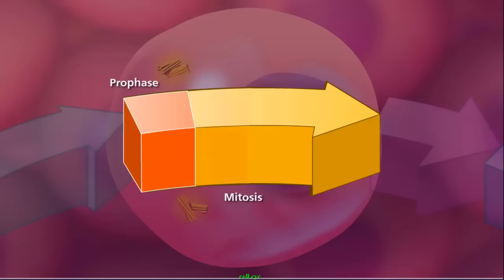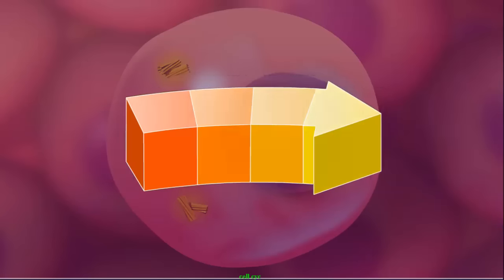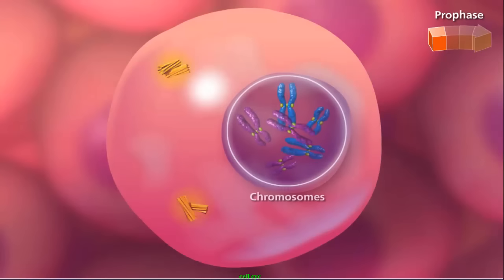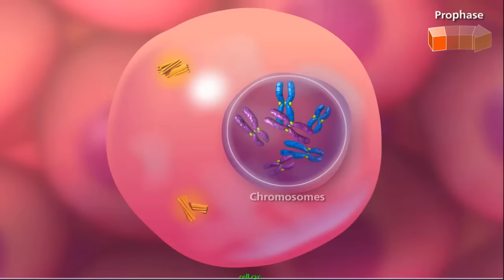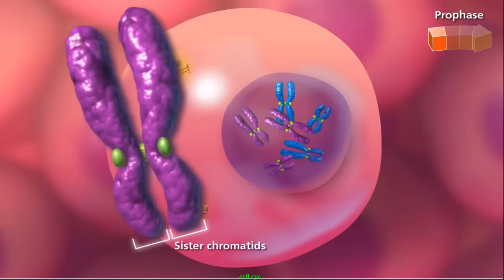The cell is now ready to go through mitosis, which consists of prophase, metaphase, anaphase, and telophase. During prophase, the chromosomes condense and become visible, appearing as two sister chromatids held together at the centromere.